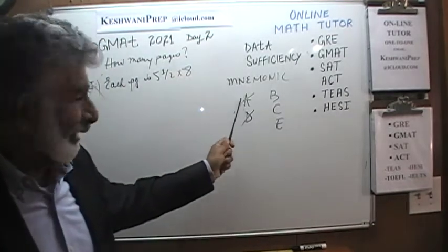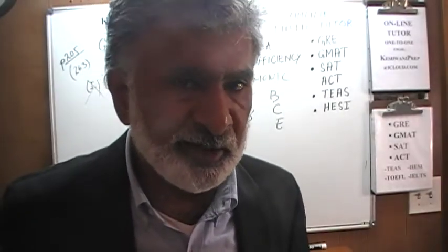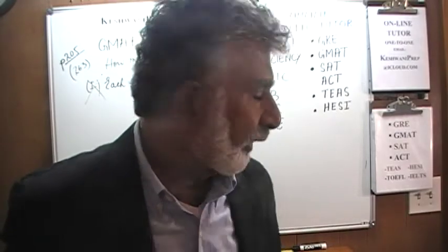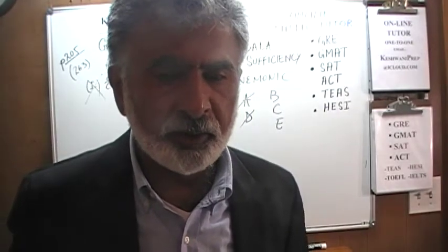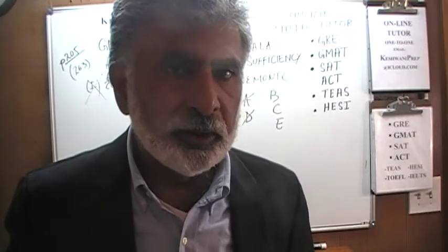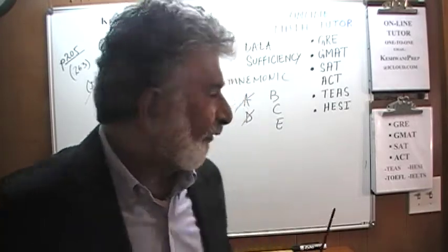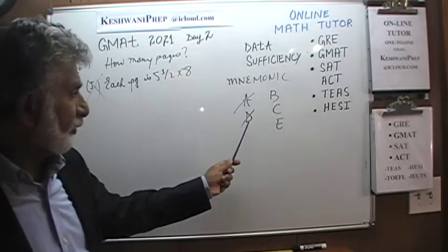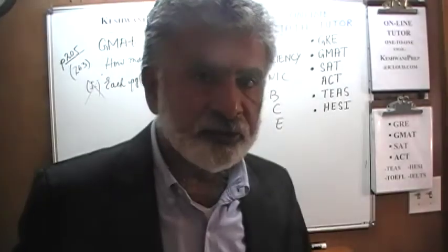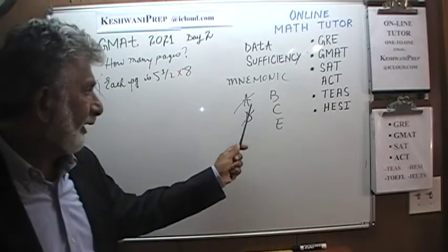Answer choice A means that the information given in statement one is by itself sufficient to answer the question. Answer choice D means both statement one and statement two are independently sufficient. Since statement one is not sufficient, that rules out D also, because D means both statements independently are enough.